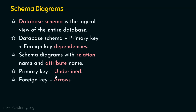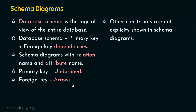Then what about foreign keys? Foreign keys are represented using arrows, because a foreign key definitely involves two tables — one table is going to refer another table. In that case, which table is referring the other table can be easily shown using arrows. And do we have only these two constraints in databases? No, we have other constraints. Can we represent all other constraints in schema diagrams? No, other constraints are not explicitly shown in schema diagrams.